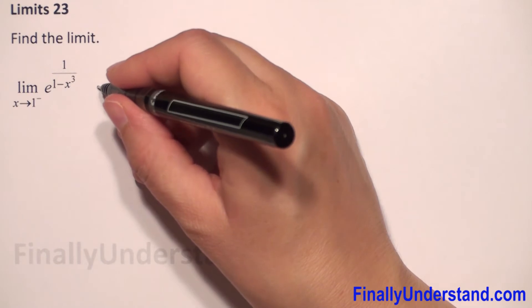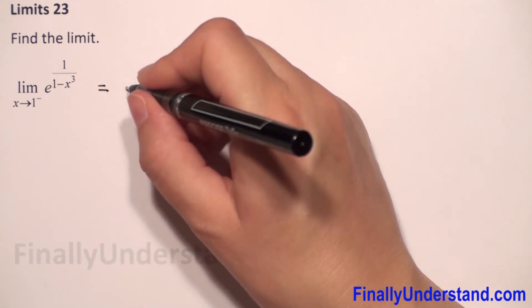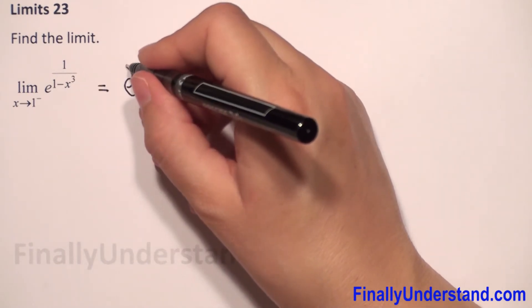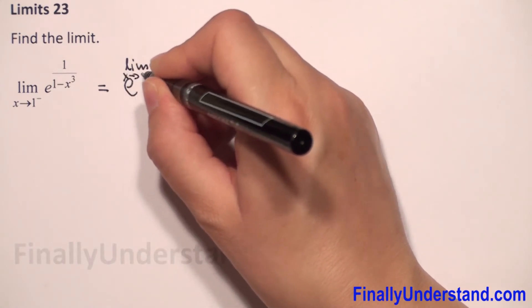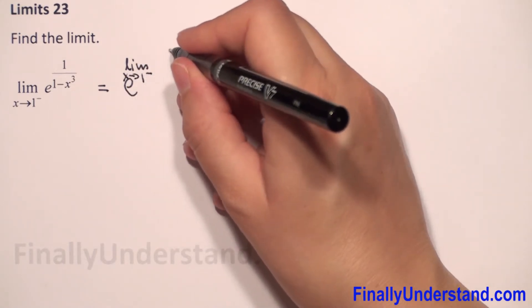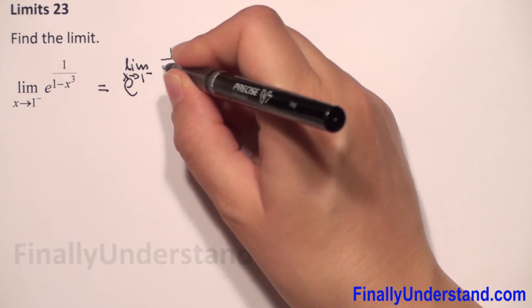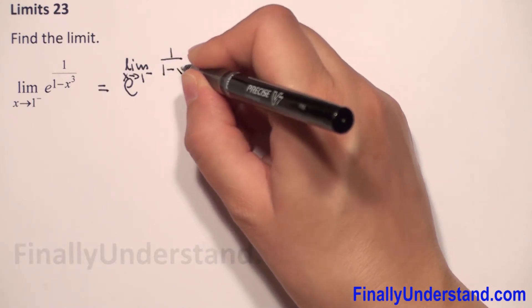So we can rewrite this as e to the limit as x approaches one from the left of one over one minus x to the third.